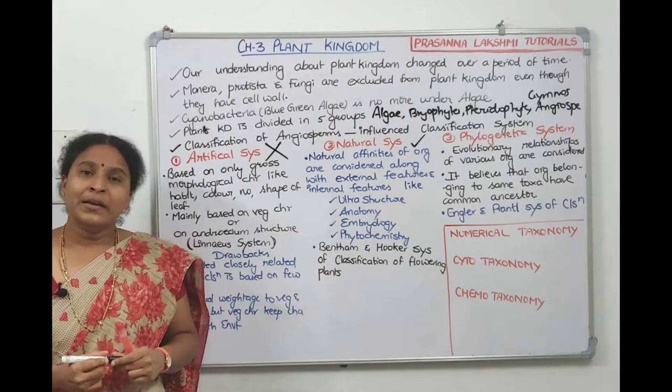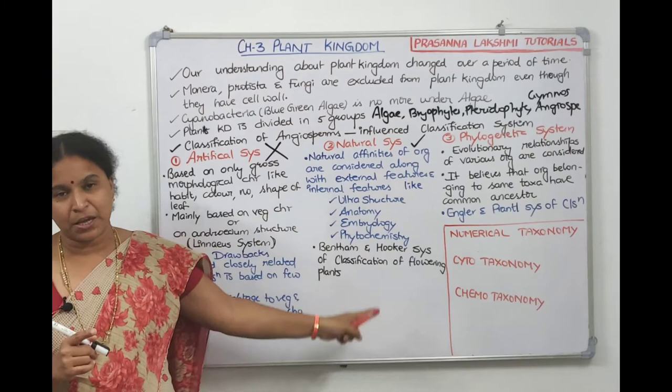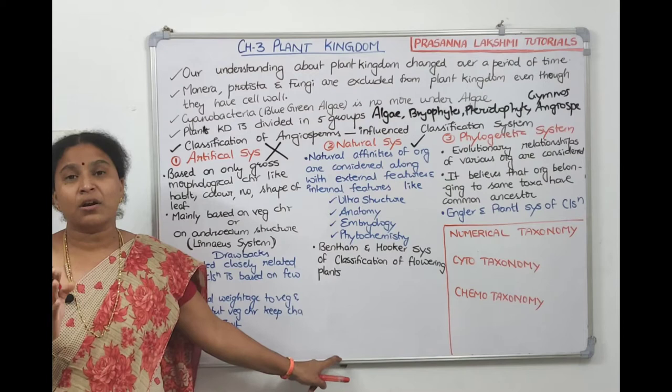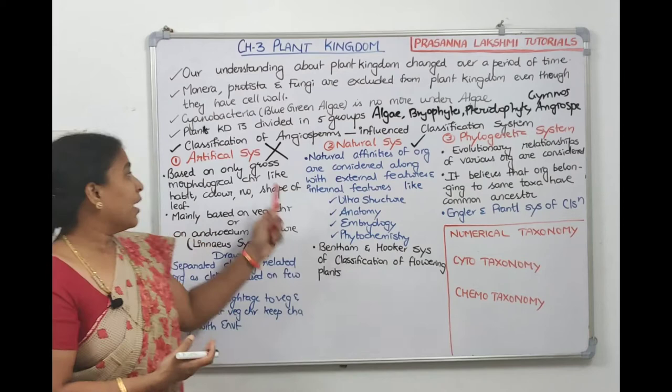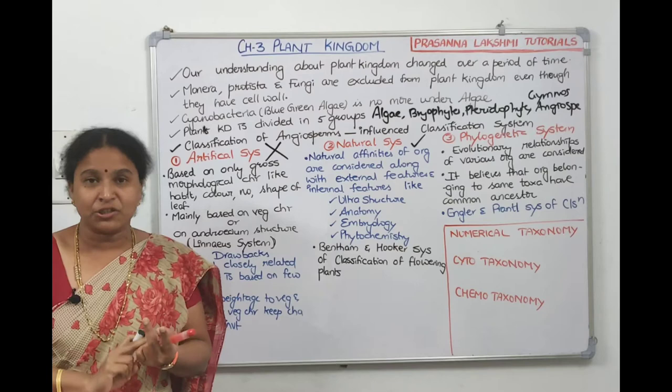An example of natural system of classification is Bentham and Hooker's classification of flowering plants. This system is still used for maintaining herbarium sheets. In contrast, the artificial system (Linnaean system) is not accepted due to its many drawbacks of using only few characters.